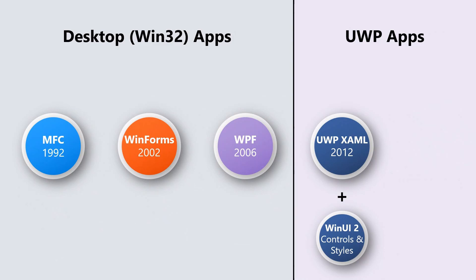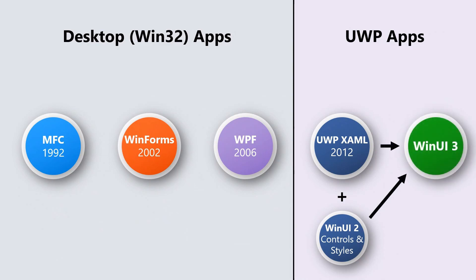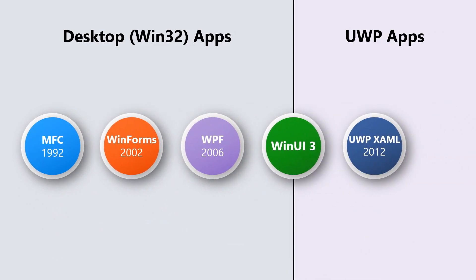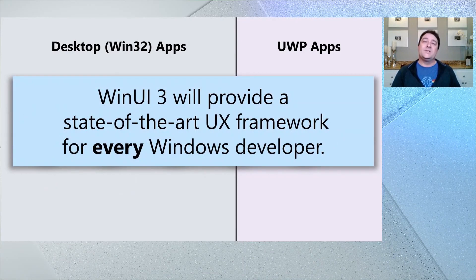While WinUI 2 is a library of controls and styles for UWP XAML, WinUI 3 is literally the entire code base of UWP XAML plus all of WinUI 2's controls and styles, plus other powerful layers of Windows technology including the Windows 10 visual layer, all wrapped up into a single UI framework. This framework will ship independently of the operating system on its own cadence. Most importantly, WinUI 3 will work in any type of app — UWP apps and desktop apps as well. You've told us to tear down the walls between Win32 and UWP, and WinUI 3 will be the first of many Windows platform technologies to do this. This broad initiative is called Project Reunion.